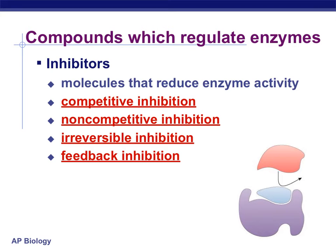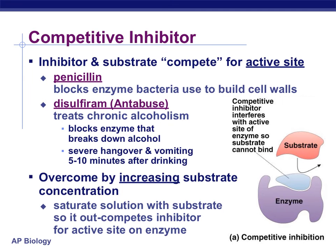Essentially the opposite of activators are inhibitors — compounds that reduce enzyme activity. Competitive inhibition is caused by an inhibitor that competes with the proper substrate for binding in the active site. When the inhibitor is found in the active site of the enzyme, the substrate is unable to bind there — it's like it's already taken up the parking spot in a parking lot. You can sometimes overcome this by increasing the substrate concentration, giving a greater chance that it's the substrate that fits in the active site rather than the competitor.